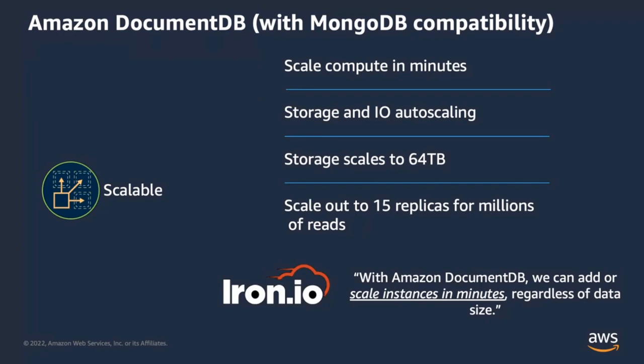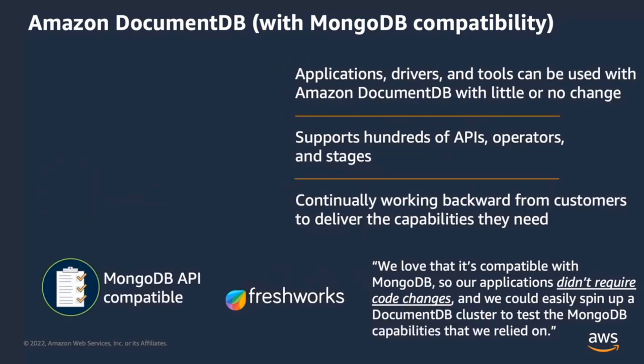Ion is one of our customers that scales their cluster regardless of data size — they perform the scale operation in minutes. They do app queue as a service and container as a service, accumulate a large volume of data, and scale within minutes regardless of how much data they are storing. DocumentDB is compatible with MongoDB 3.6 and 4.0. You can use the same MongoDB SDKs, tools, and APIs in your application to interact with DocumentDB.